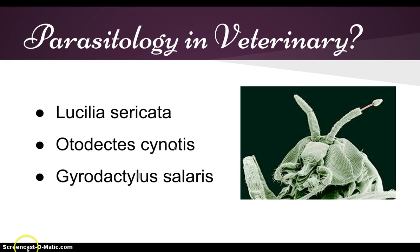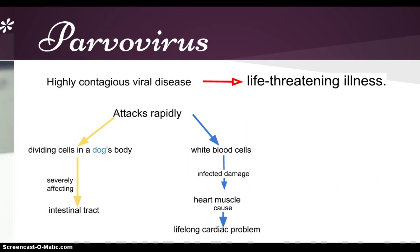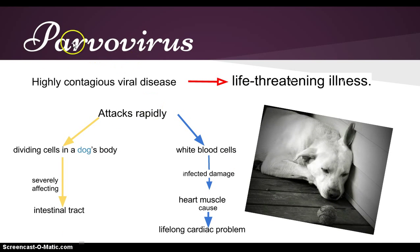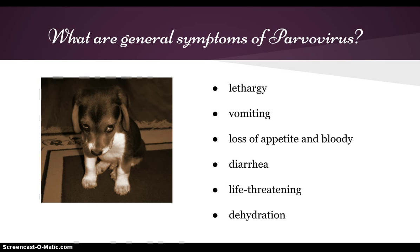Parvo or parvovirus in dogs. Parvovirus is a highly contagious viral disease that produces life-threatening illness. It attacks rapidly dividing cells in a dog's body, severely affecting the intestinal tract. It also attacks white blood cells and, in infected young dogs, the heart muscle, causing life-threatening cardiac problems.